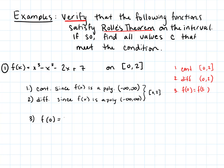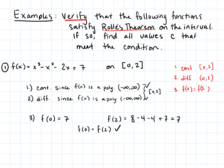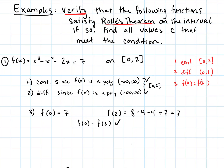Since it's continuous and differentiable from negative infinity to infinity, it will definitely hold on the interval from 0 to 2. For the third condition, f(0) equals 7, and f(2) equals 8 minus 4 minus 4 plus 7, which is also 7. So f(0) does equal f(2) — both equal 7. Check, check, check — we met all three conditions.